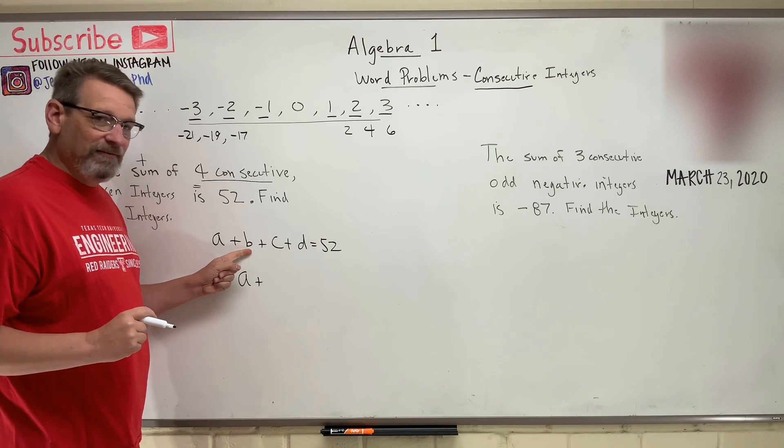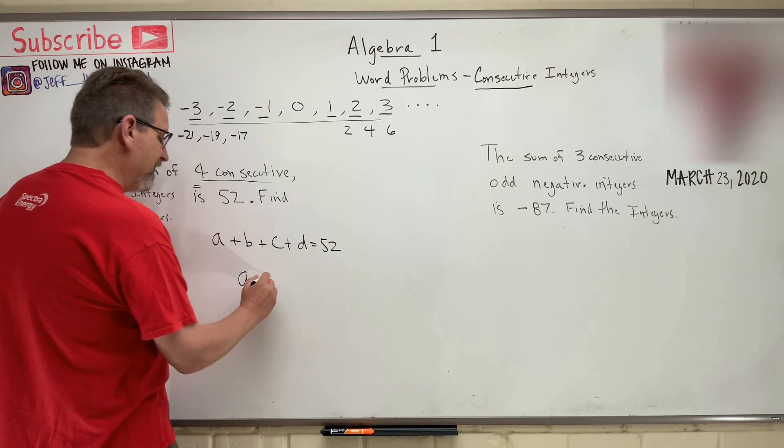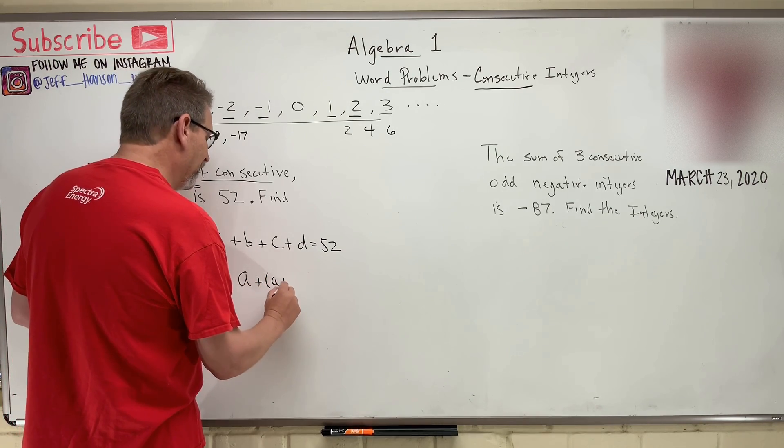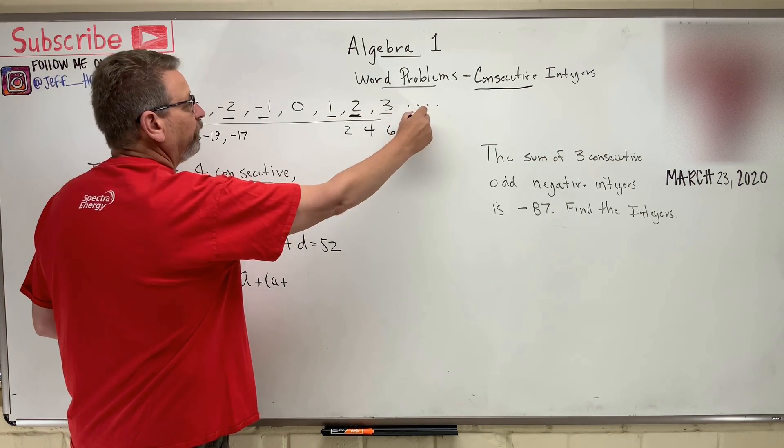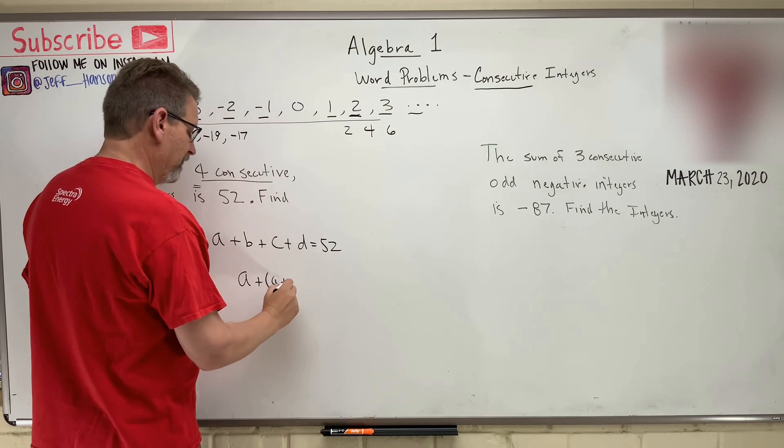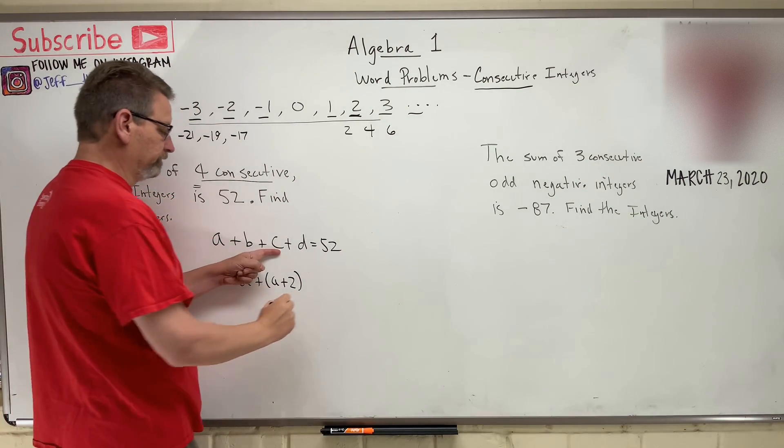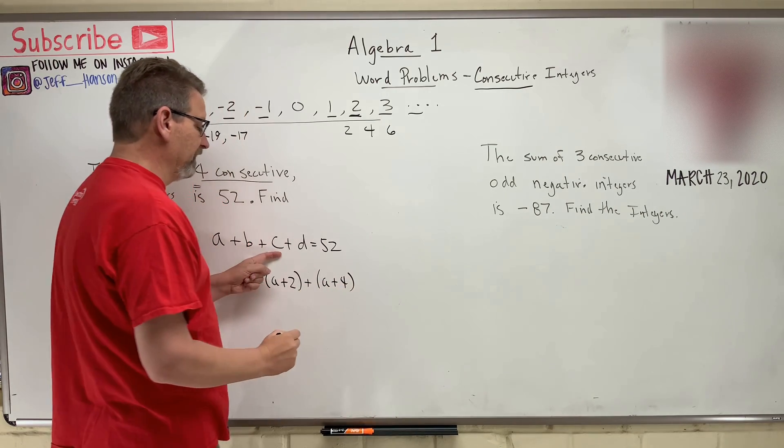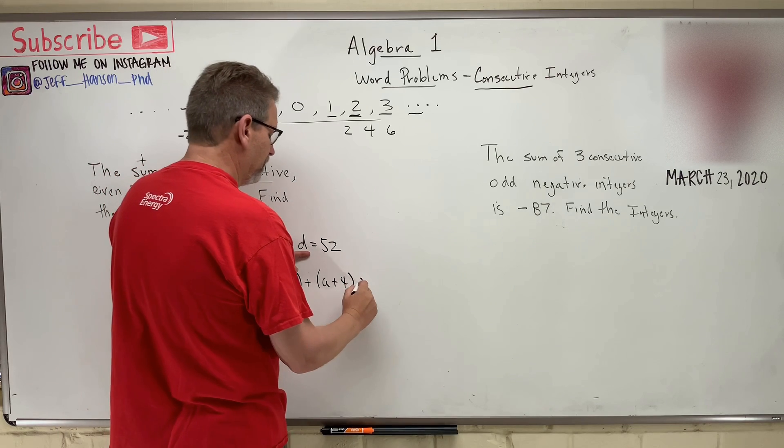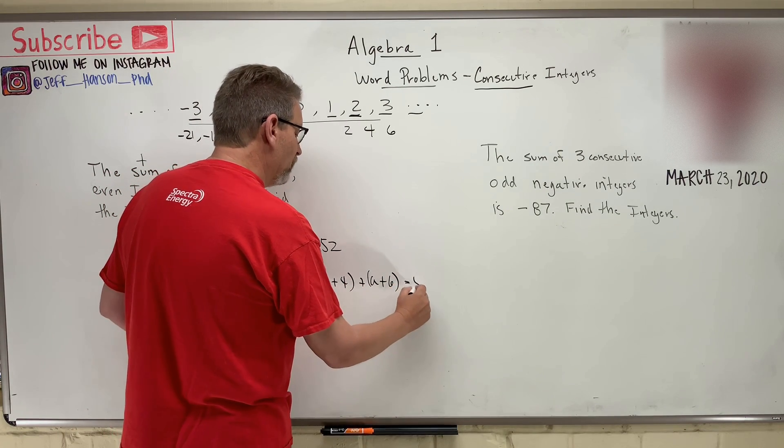Then B, the next one in line, how big is he going to be? You know how big he's going to be? He's going to be A plus, right? If we're talking two, how many do you have to go to get to four? One, two, right? So he's A plus two. What is C equal to? What is C? C is A plus four, isn't he? And what is D? He's A plus six.